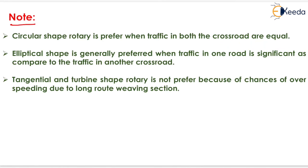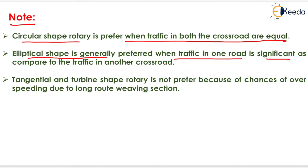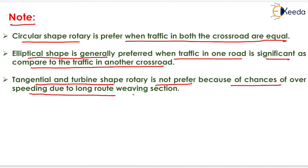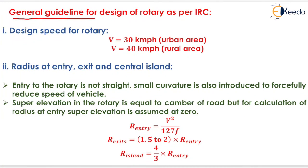Circular shape rotary is preferred when traffic in both cross roads is equal. Elliptical shape is preferred when traffic in one road is significantly higher than the other. Tangential and turbine shape rotaries are not preferred because of chances of over-speeding due to the long weaving section.